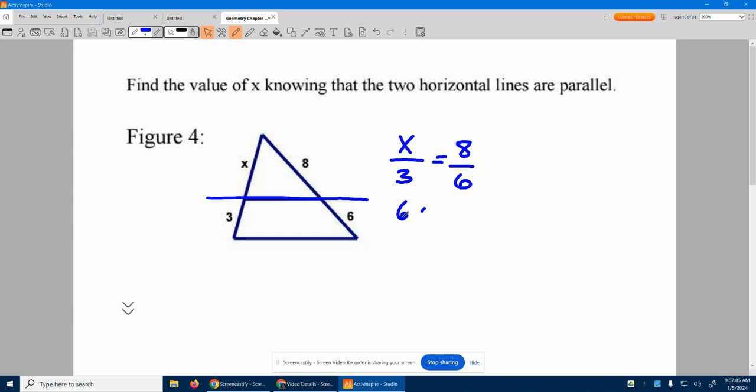We cross multiply. I get 6x equals 24. Six times x equals 8 times 3. So 6x equals 24, divide by 6. You have x right here. Must be a 4 on that side.